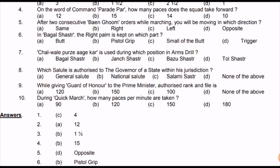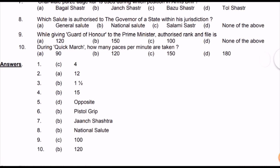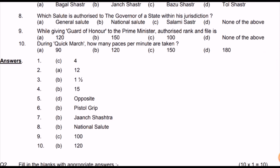Question seven: the command 'Chal Vaha Purja Aage Kar' is given for Jaj Shastra — make sure to remember this. Question eight: the salute authorized to the Governor of a state is the National Salute, also called Rastriya Salute. Question nine: while giving guard of honor to the Prime Minister, there are 100 cadets; for the President, there are 150 cadets or jawans saluting.